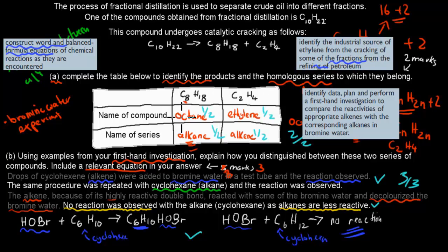So this was, the whole alkanes and alkenes came from that dot point. So that was question A. And the bromide experiment came from this one: identify data, plan and perform firsthand investigation to compare their activities of appropriate alkanes with the corresponding alkenes in bromide water. So that was part B.